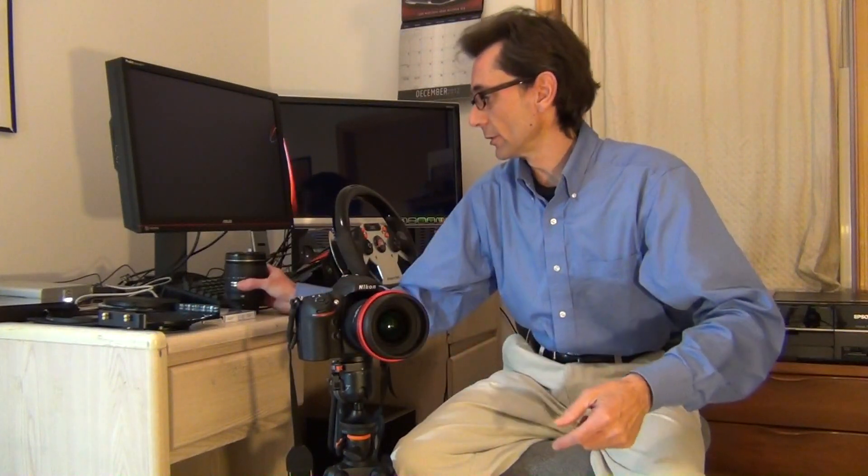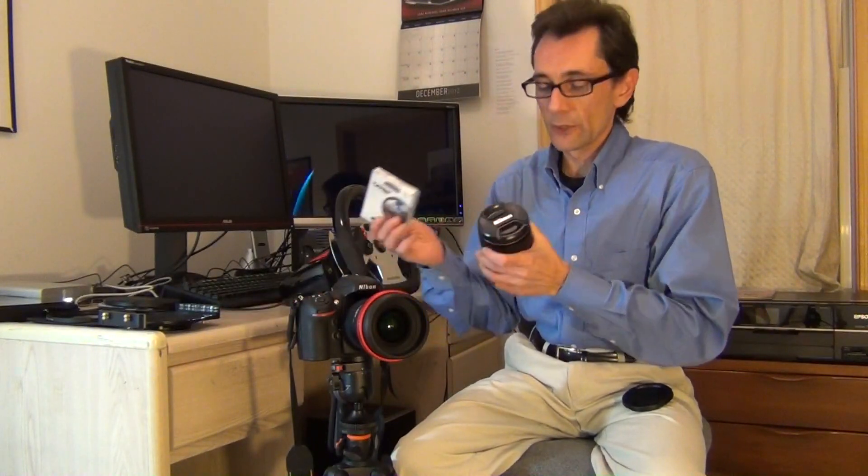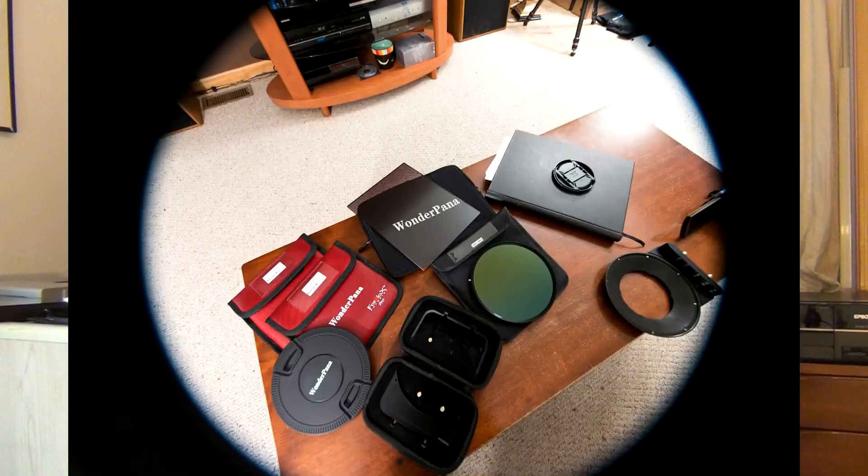Put it on there. And when you screw in an 82mm thread, like you would screw on, for example, a Tiffen lens on this Nikon 24-120 lens, well, at 12mm, you wind up with just a bit of vignetting. And that's not really what we want.